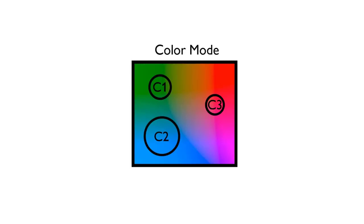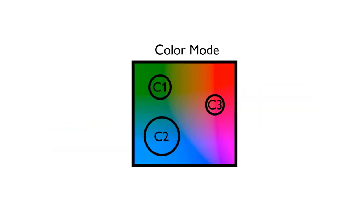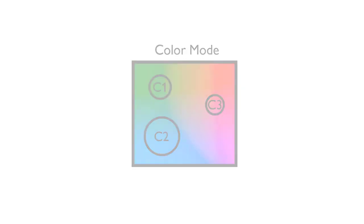Color mode. This diagram shows a color space and there's three taught colors. In the center of each circle is where each particular color was taught. The circle around that shows the tolerance setting for each color. So the sensor would switch on whenever the color is anywhere within any of those three circles.